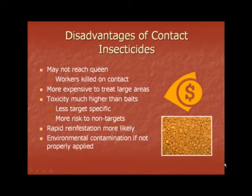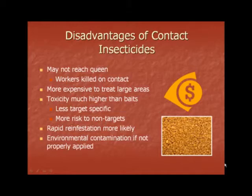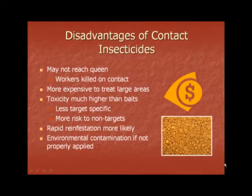There are also some disadvantages to using contact insecticides. You may not quite reach the queen, as the workers are killed on contact and may not make it down to the queen. They are more expensive to treat in large areas. Toxicity is much higher than baits. They are less target specific, with a higher risk of non-target organisms dying. Rapid re-infestation is much more likely, and there is the risk of environmental contamination if they are not properly applied.